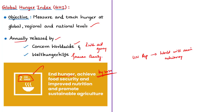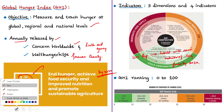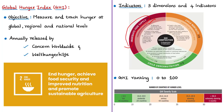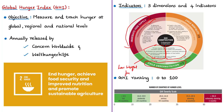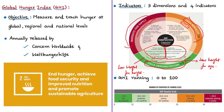The first dimension is inadequate food supply, measured by the share of the population that is undernourished. The second dimension is child undernutrition, covering two indicators: child wasting (low weight for height) and child stunting (low height for age, indicating chronic undernutrition) for children under five. The third dimension is child mortality, measuring the mortality rate of children under five. Each dimension has equal one-third weight, and within child malnutrition, wasting and stunting each have one-sixth weight.